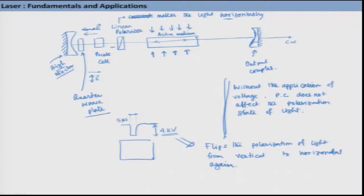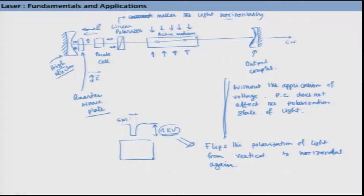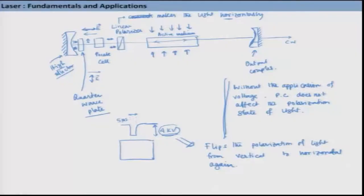So the light is horizontal here, goes through this element as circularly polarized light, and this circularly polarized light passes through and becomes vertical. When I apply this amount of voltage, it rotates the plane of polarization by 90 degrees again. This is possible only when I apply the voltage by a particular amount - in this case 4 kilovolt - which is generally used in Nd:YAG laser, a Q-switched Nd:YAG laser, just for your information.